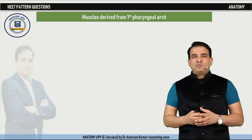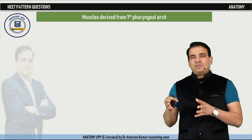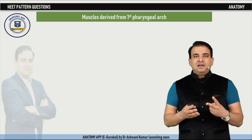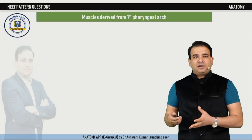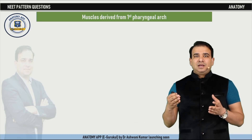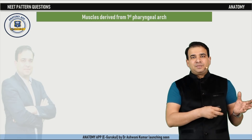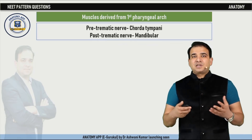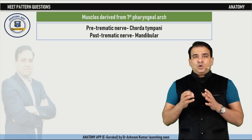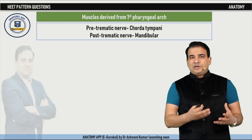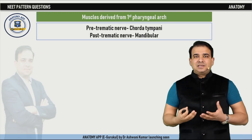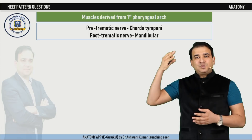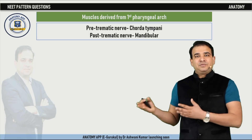The next slide covers muscles derived from the first pharyngeal arch. To identify these muscles, remember which nerve supplies them. The first pharyngeal arch is supplied by two nerves: the main nerve is the mandibular nerve, and a pre-trematic nerve is the chorda tympani, which joins the lingual nerve — a branch of the mandibular. The chorda tympani is secretomotor to the submandibular and sublingual glands and carries taste from the anterior two-thirds of the tongue, so it does not supply any muscles. Therefore, the muscles of the first arch are those supplied by the mandibular nerve.